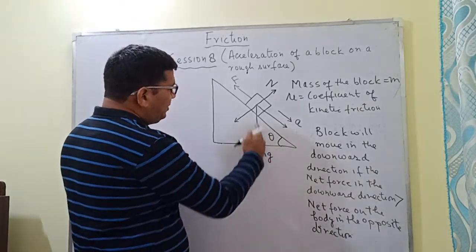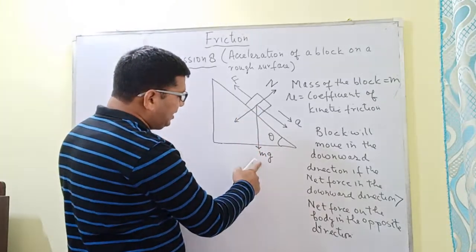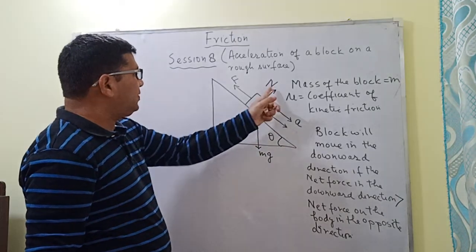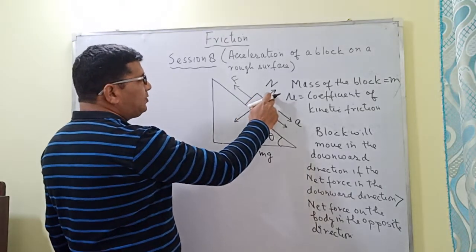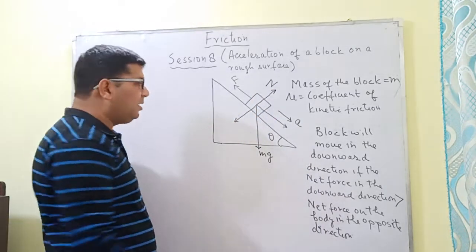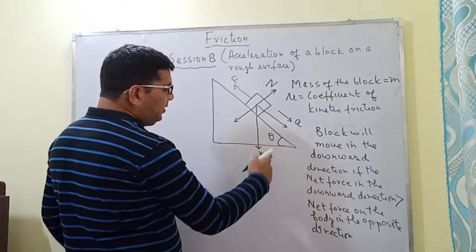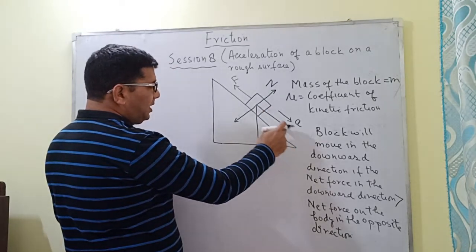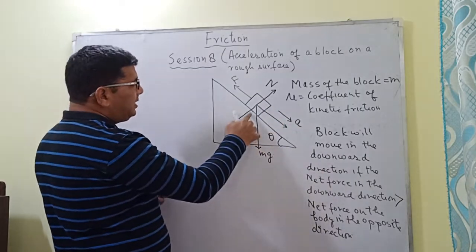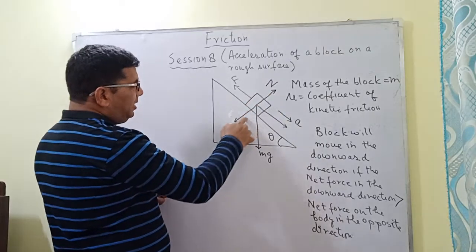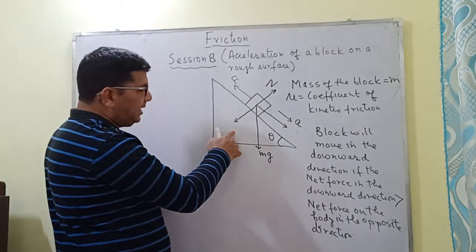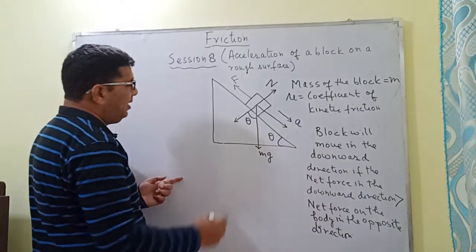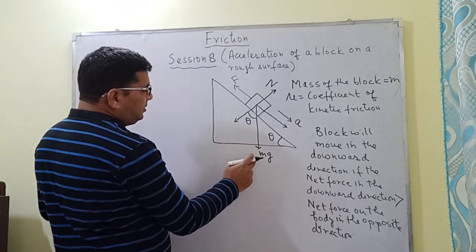The angle of inclination of the plane is theta. Since the mass of the block is m, the weight mg acts vertically downward. The normal reaction always acts perpendicular to the surface, as indicated by the arrow. I will now resolve this weight into two components: one along the plane and the other perpendicular to the inclined plane.